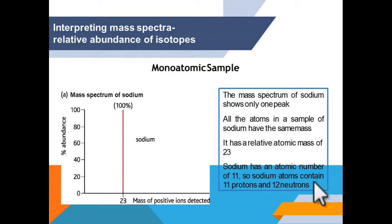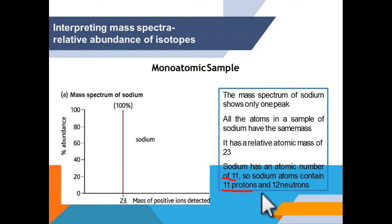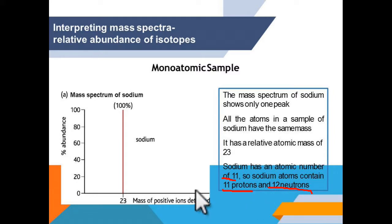We can say sodium has an atomic number of 11, meaning it has 11 protons. Because it is a neutral atom, the proton and electron count will be the same. So this is your neutron count. That is a simple interpretation of a monatomic sample.